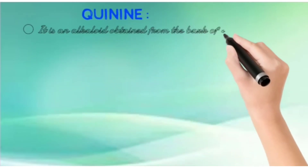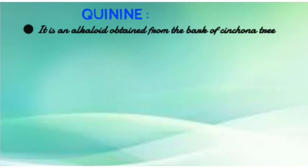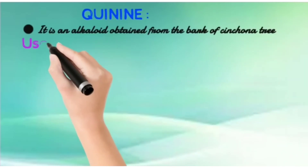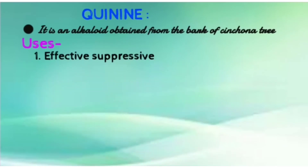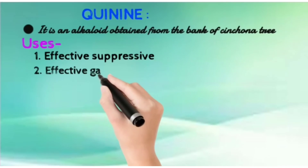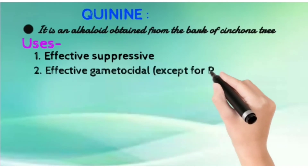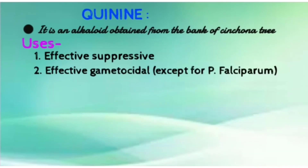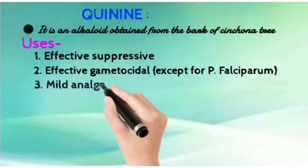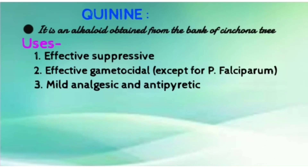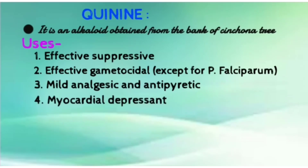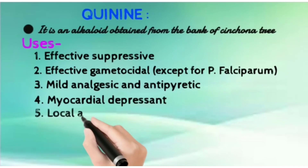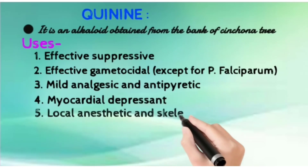The next drug is Quinine. It is a natural drug — an alkaloid obtained from the bark of the cinchona tree. Its important actions are that it is a very effective suppressive, a mild analgesic and mild antipyretic, and an effective gametocidal drug. It also acts as a myocardial depressant, local anesthetic, and skeletal muscle relaxant.